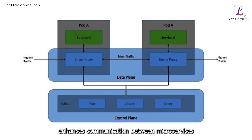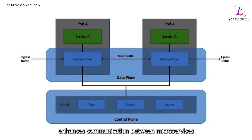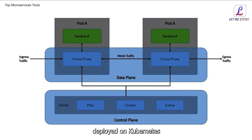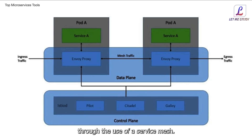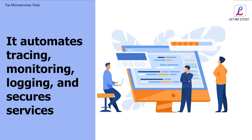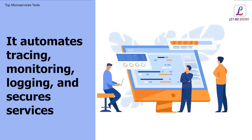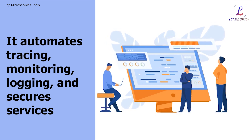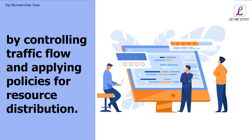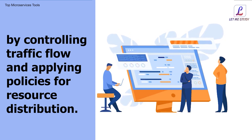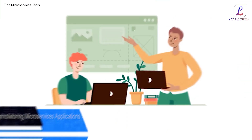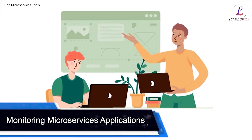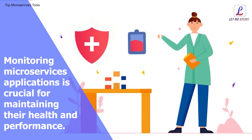Istio enhances communication between microservices deployed on Kubernetes through the use of a service mesh. It automates tracing, monitoring, logging, and secures services by controlling traffic flow and applying policies for resource distribution.